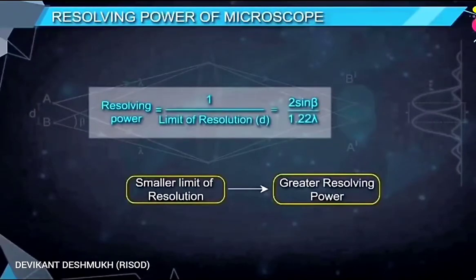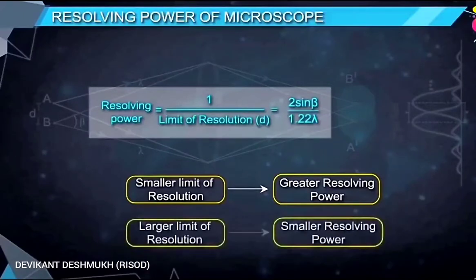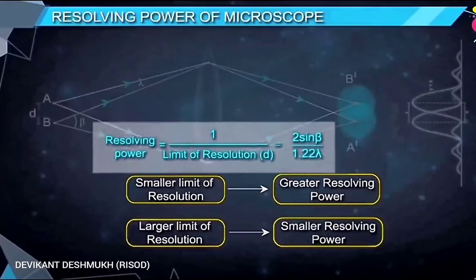Therefore, we can say that smaller limit of resolution gives greater resolving power. And similarly larger limit of resolution produces small resolving power of microscope.